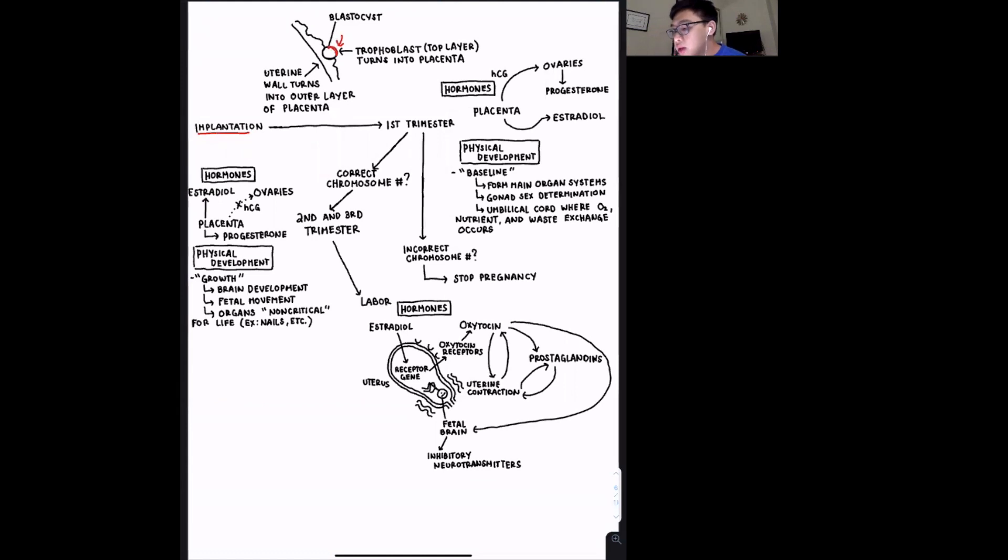Now with first trimester, we have hormone production and physical development. For physical development, it's best characterized as we are forming the baseline or the basics of a human. So where are the main functions or things that you need in order to form a human? In this case, it's the main organ systems, it's sex, and the umbilical cord, which is important for nutrient and waste and gas exchange. For hormones, the placenta is secreting HCG, which causes the ovaries to produce progesterone. And then the placenta is also secreting estradiol. From here, there are two potential paths. There is if you have incorrect chromosome numbers, so this is telling us that the resulting embryo is not fit for life, and therefore the body will stop the pregnancy. However, if you have correct chromosome number, which is signaling that this embryo can develop normally, then we'll continue on to the second and third trimester.